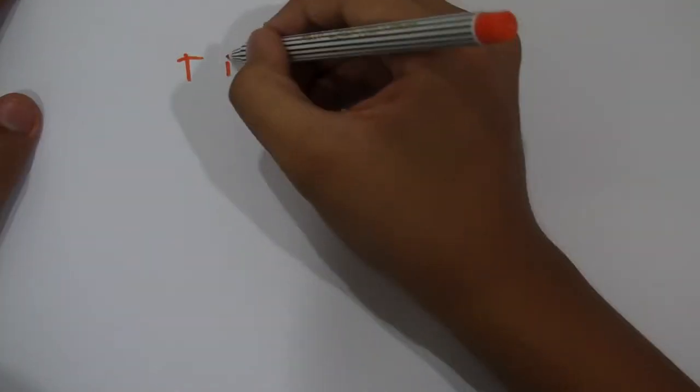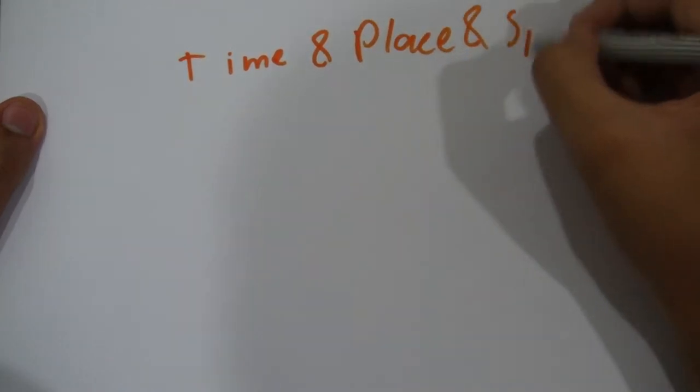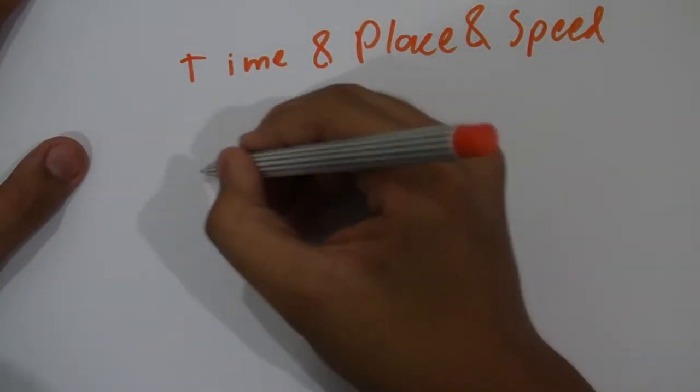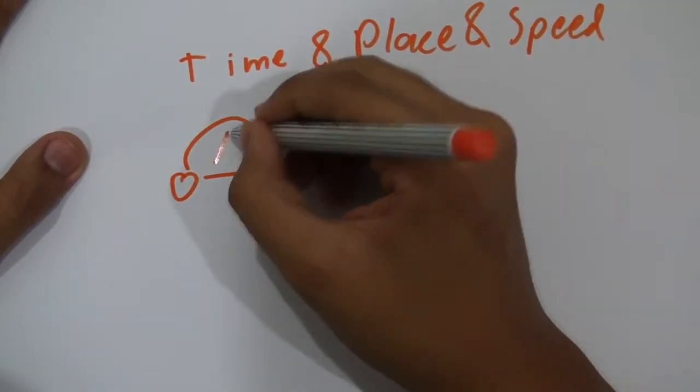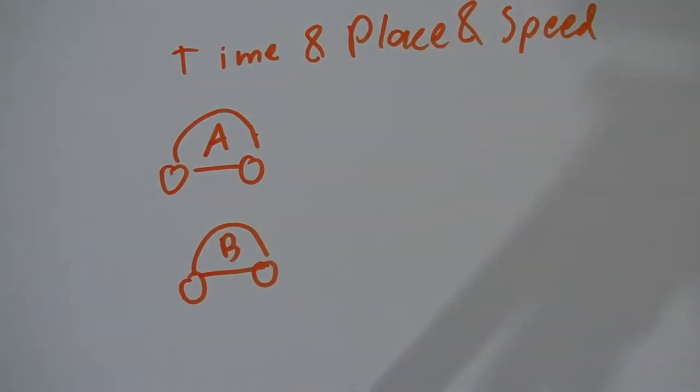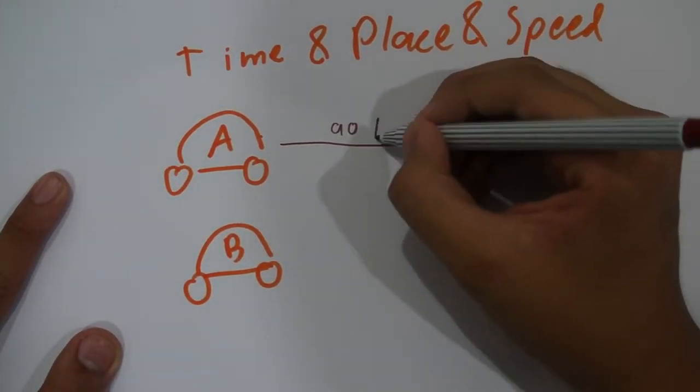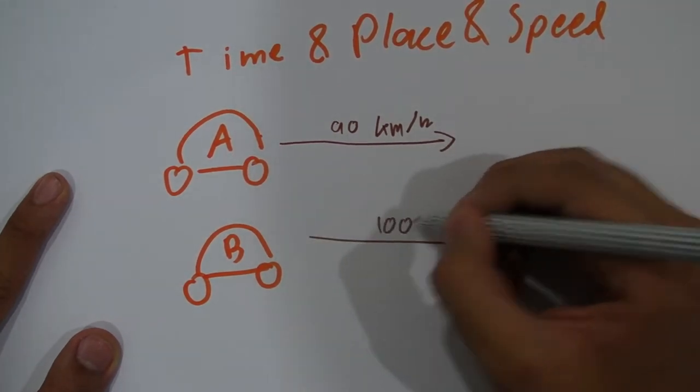According to Albert Einstein, time, place, and speed are all related as the same thing in space and time. For example, if we have two race cars, the race car A and B, which the race car A travels at 90 kilometers per hour, while the race car B travels at 100 kilometers per hour.